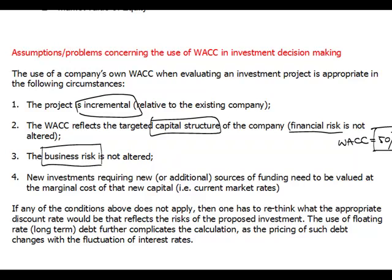If we have investments with a totally new source of funding, the relevant discount rate would be the marginal cost of the new capital. So if a new project will be all-debt financed, the relevant discount rate is just the incremental borrowing rate — the rate at which we obtain the finance. In summary, weighted average cost of capital combines cost of equity and cost of debt to produce a discount rate very often used in NPV calculations. However, it can only be used as a discount rate when the specified conditions are met.